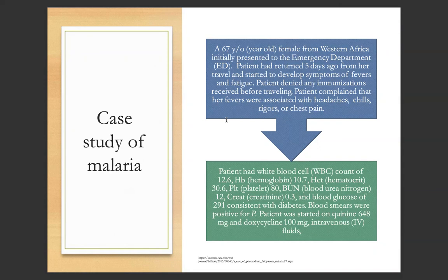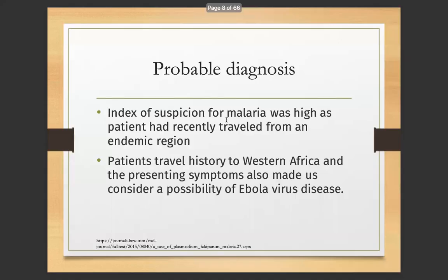The patient had a white blood cell count of 12.6, hemoglobin 10.7, hematocrit 13.6, platelets 18, blood urea nitrogen 12, creatinine 0.3, and blood glucose of 291, consistent with diabetes. Blood smears were positive for P. falciparum. The patient was started on quinine 648mg and doxycycline 100mg with IV fluids. The index of suspicion for malaria was high as the patient had recently traveled from an endemic region. The patient's travel history to western Africa and presenting symptoms also led us to consider a possibility of Ebola virus disease.